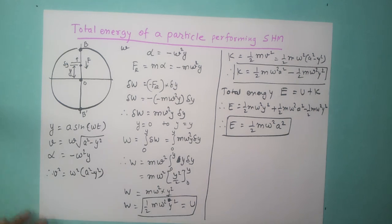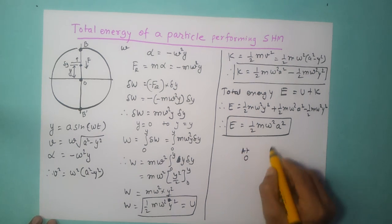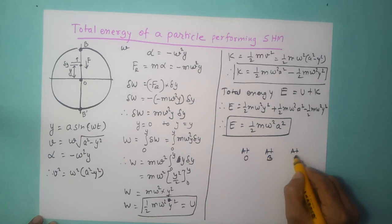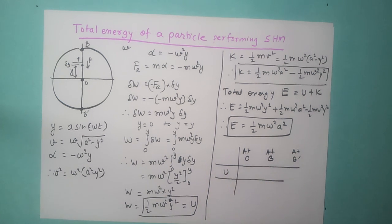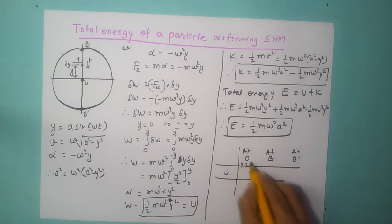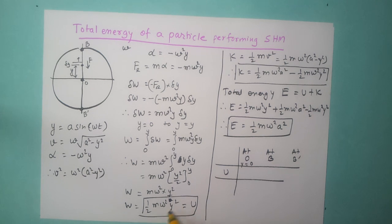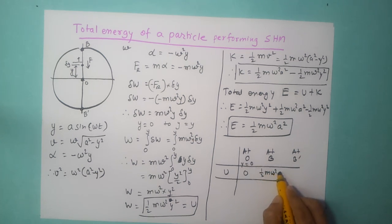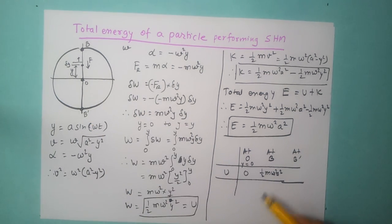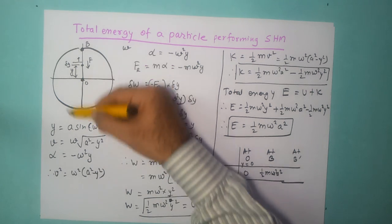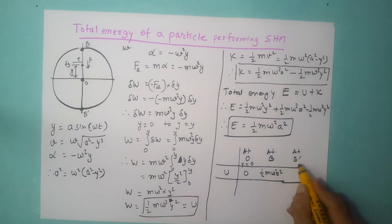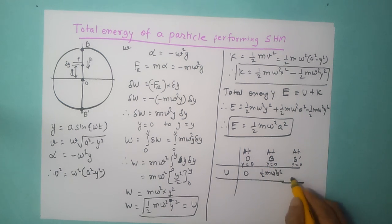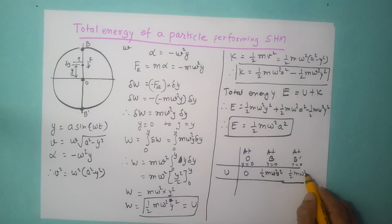Let us look at the total energy at different points: at O, at B, and at B dash. At O, y equals zero, so potential energy half m omega squared y squared equals zero. At location B, y equals a, so potential energy becomes half m omega squared a squared. At B dash, y is again equal to a and since energy is scalar we only consider magnitude, so potential energy is again half m omega squared a squared.